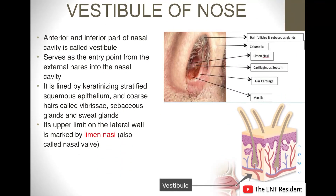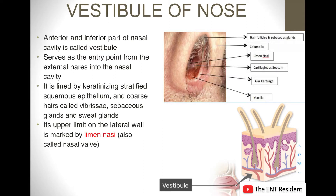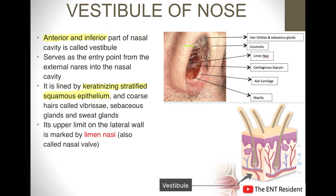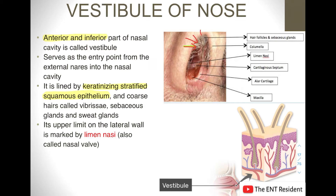The vestibule is the first part of the nasal cavity. It is the anterior and inferior-most part of the nasal cavity, and it serves as an entry point from the external nares into the nasal cavity. Its lining epithelium is a keratinizing stratified squamous epithelium — it is lined by skin — and it also has coarse hair known as vibrissae. As you can see in this picture, these coarse hairs are the vibrissae. This region also has sebaceous and sweat glands.